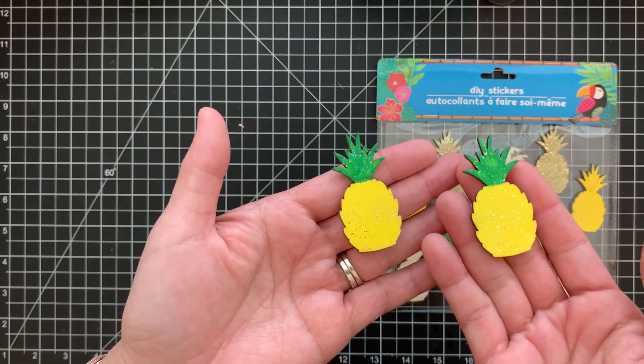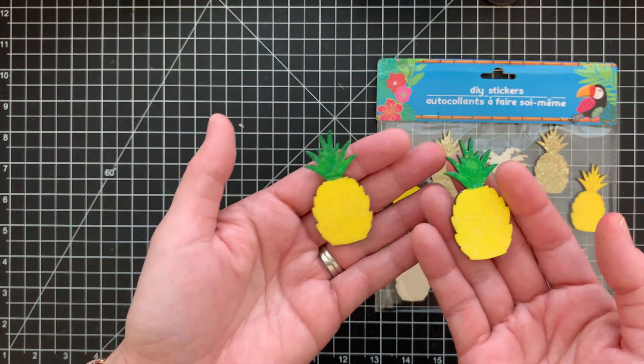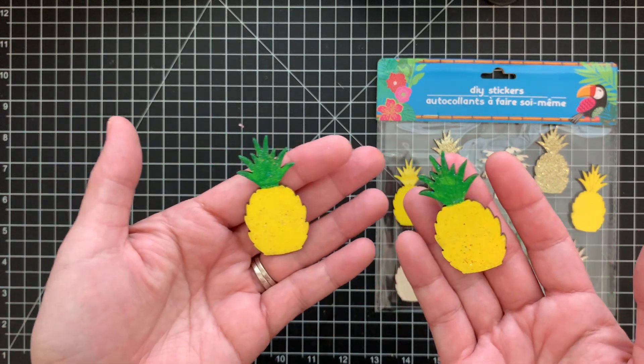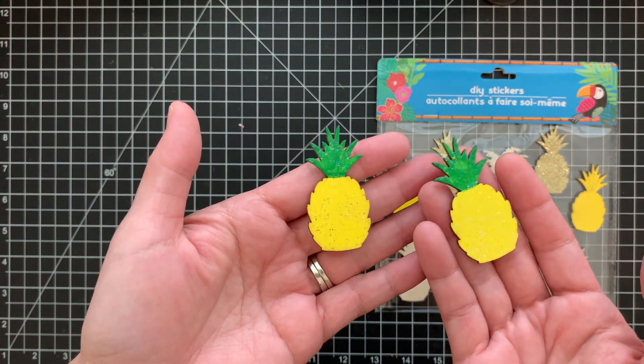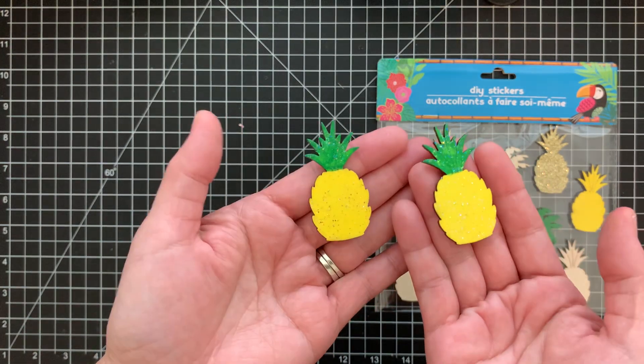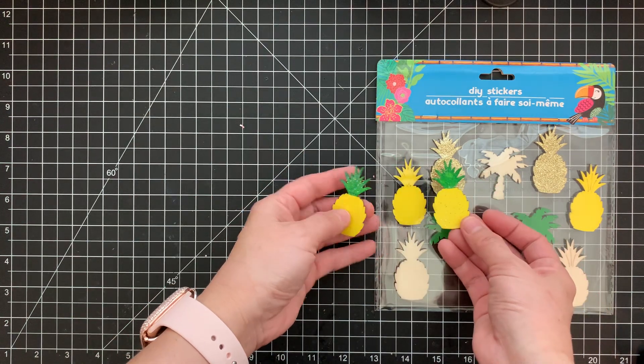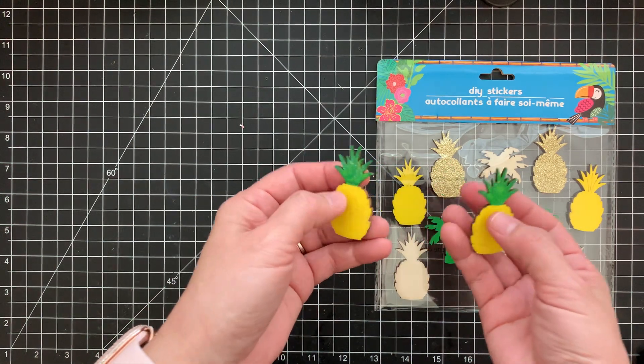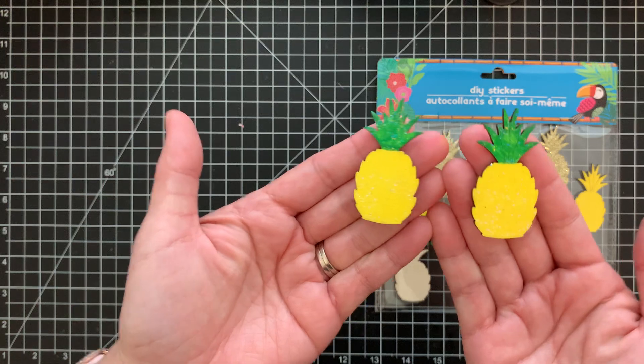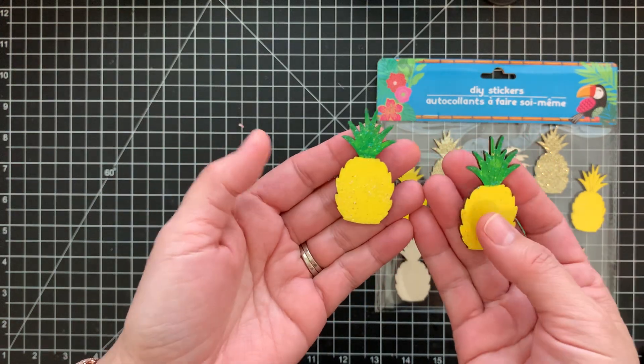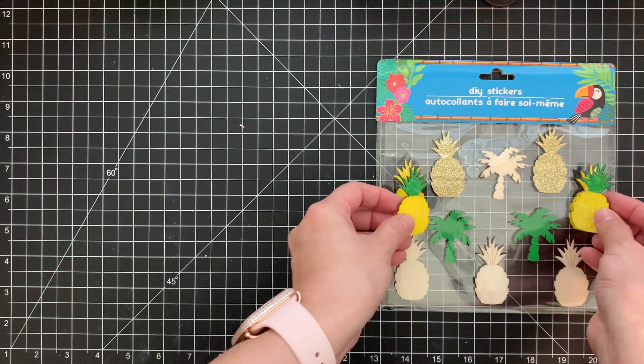And so what I did was I painted the top green and I used like an iridescent paint and I painted over everything once the top was dry. And that's how my pineapples turned out. So it went from all yellow to glittery, a real pineapple color. So I like how those turned out.